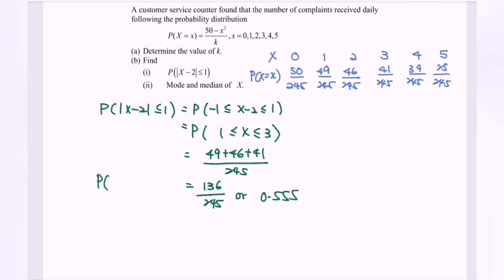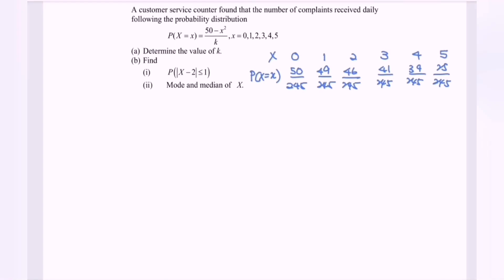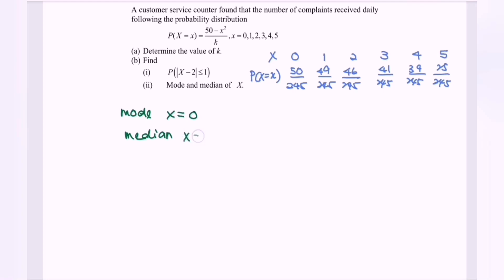That is the probability that |x - 2| ≤ 1. Next, find the mode: referring to the table, the highest probability is at x = 0, so the mode is x = 0. For the median: summing probabilities at x = 0 and x = 1 gives 99/245, which is less than 0.5; adding x = 2 gives more than 0.5. So the median x equals 2.